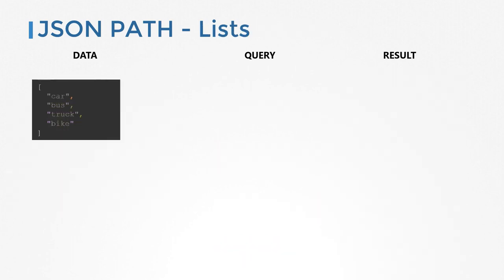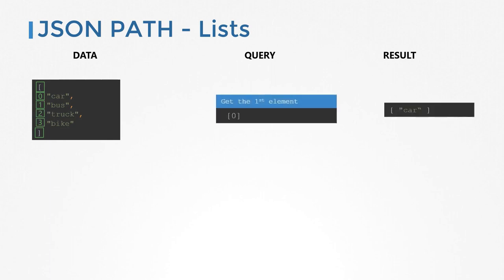Let us now look at lists or arrays. Here I have a list of different types of vehicles like car, bus, truck, and bike. There are no curly brackets, so there are no dictionaries — this is a simple list of names. The root element in this JSON document is an array denoted by the square brackets. To get a particular element from a list, use square brackets in your query and specify the position of the item. The indexes start at zero, so the first element is at zero, the second at one, the third at two, etc.